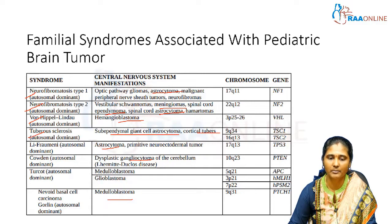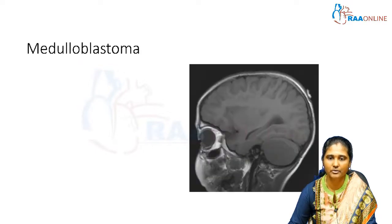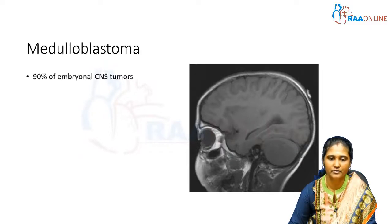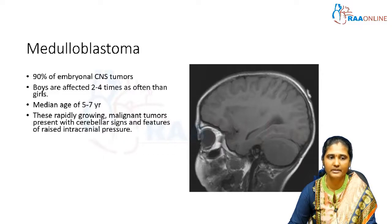Moving on to individual tumours, the first is medulloblastoma — a midline cerebellar tumour that usually affects young children. Neuroimaging reveals a midline mass arising from the vermis, effacing into the fourth ventricle and basal cisterns, causing obstructive hydrocephalus. Medulloblastoma accounts for 90% of embryonal CNS tumours; boys are affected 2 to 4 times more often than girls, with a median age of occurrence around 5 to 7 years. These are rapidly growing malignant tumours presenting with cerebellar signs and features of raised ICP.